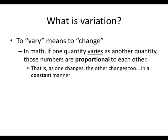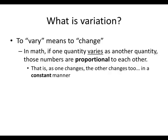And in math, what we talk about is if one quantity varies as another quantity, those numbers are said to be proportional to each other, which means as one of those quantities change, the other one changes too, and it happens in a constant manner.